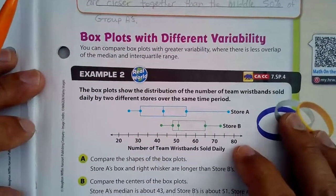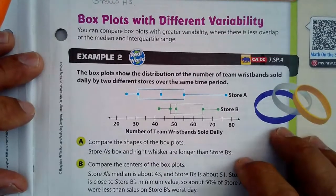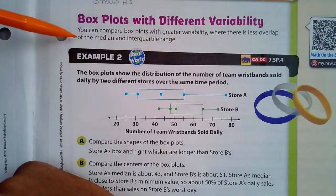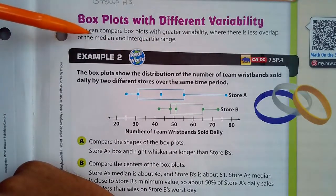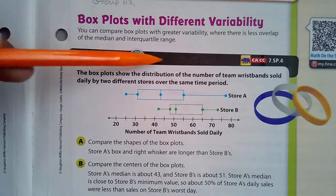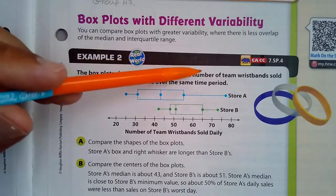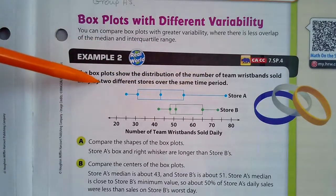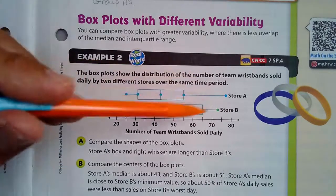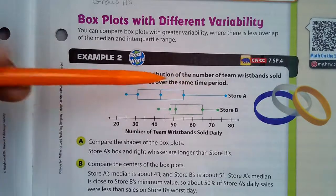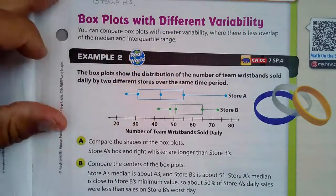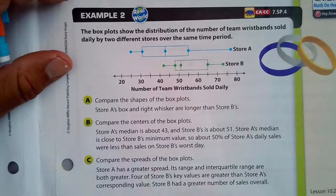Box plots with different variability: you can compare box plots with greater variability, where there's less overlap of the median and interquartile range. The box plots show the distribution of the number of team wristbands sold daily by two different stores over the same time period. Store A has a huge whisker, and Store B has a really short one.